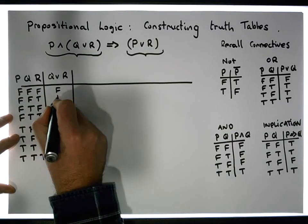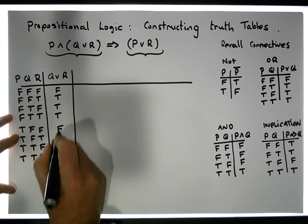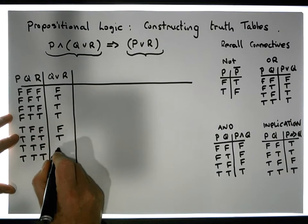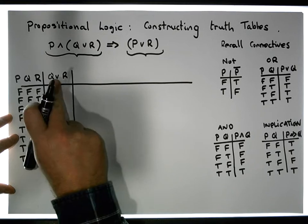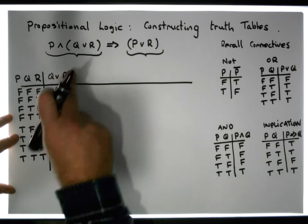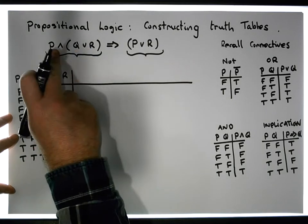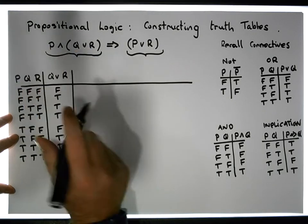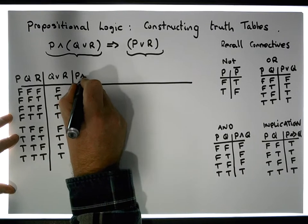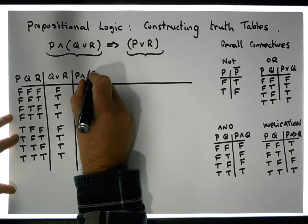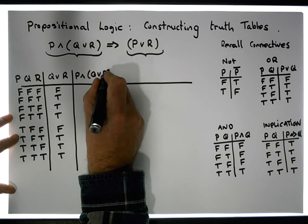So everywhere else it must be true. And then what we'll do is AND it with P. So we have P ANDed with Q OR r OR.